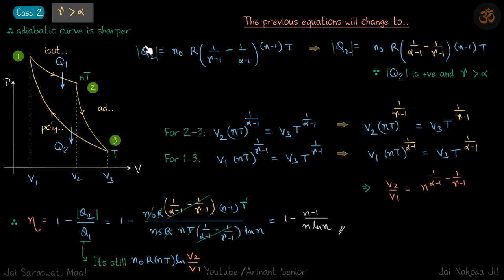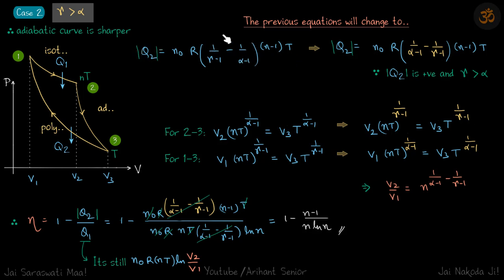But in this case, because q2 must be positive, and the adiabatic curve is sharper meaning gamma is greater than alpha, the term for C would become negative. We don't want that, so we put a minus sign to make this quantity positive. Since q2 is positive and gamma is greater than alpha, the equation for q2 changes sign accordingly.